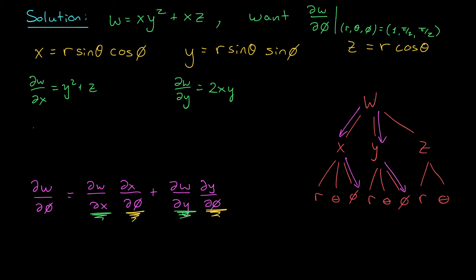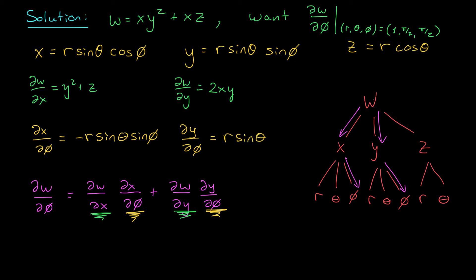Now let's find the partial derivative of x with respect to phi. We treat r and theta like constants, so r sine theta is just left alone, and we take the partial derivative of cos phi with respect to phi, which gives us minus sine phi. As for the partial derivative of y with respect to phi, we leave r sine theta alone and differentiate sine phi with respect to phi, which gives us cos phi.